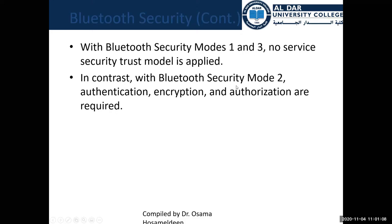If you set Bluetooth to mode one or three, anybody can reach the device and use its services. But if you set it to mode two, you must have authentication, authorization, and confidentiality through encryption. This is the overview of the security modes and their respective security levels.